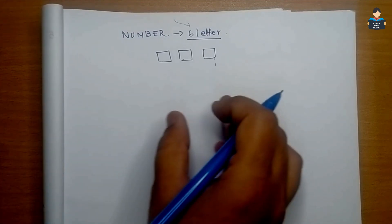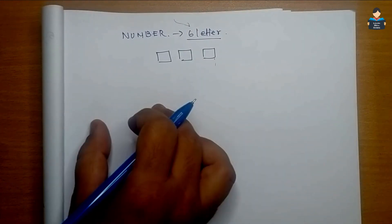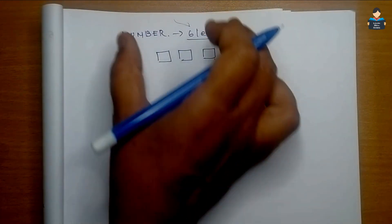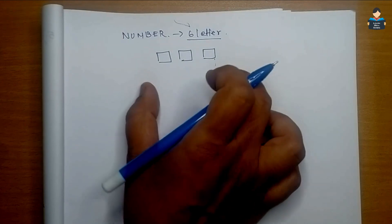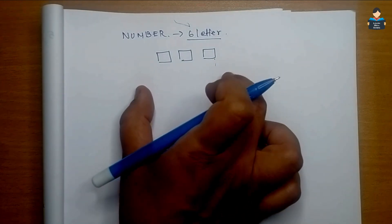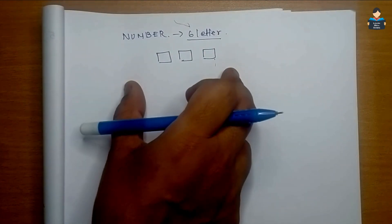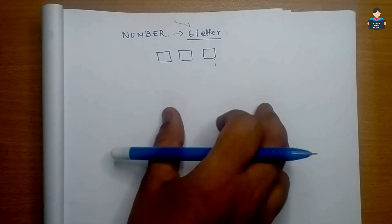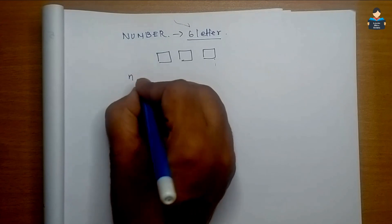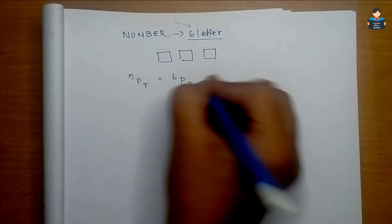Permutation of 6 letters taken 3 at a time. It is only 3 letters in one arrangement. So this is nPr, that is 6P3.